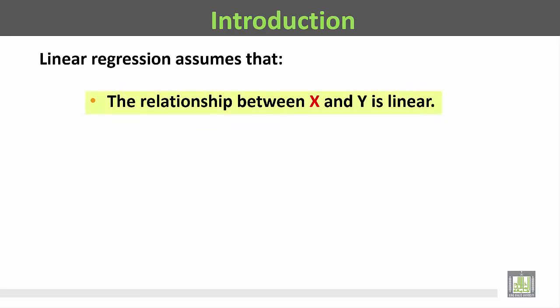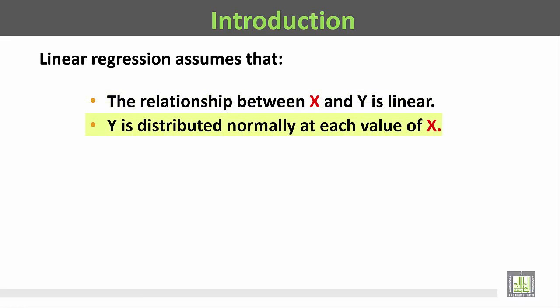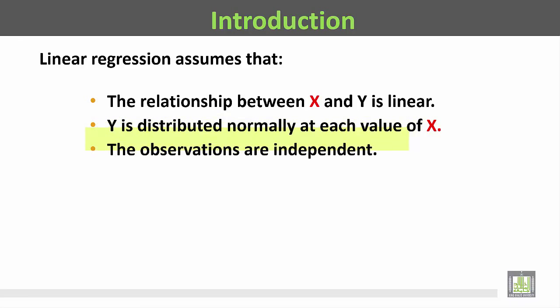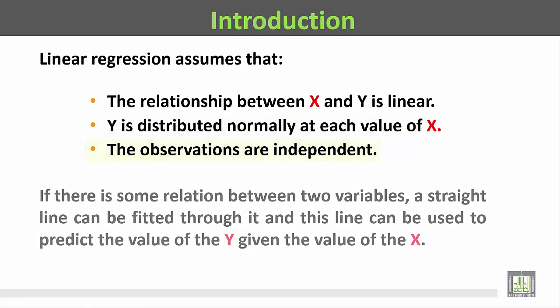Linear regression assumes that the relationship between x and y is linear, y is distributed normally at each value of x, and the observations are independent.